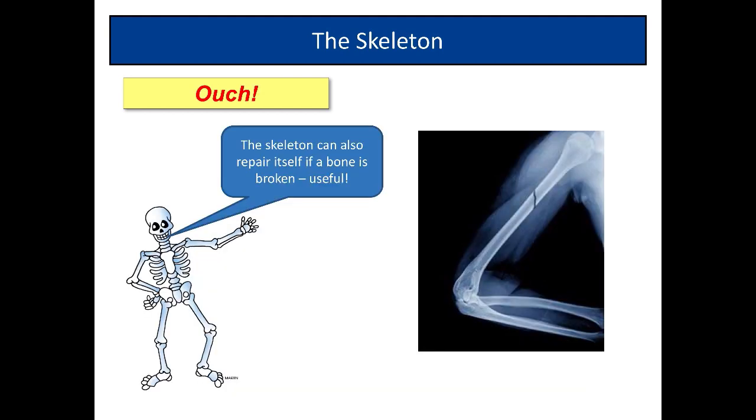Sometimes we have breaks. This looks to me to be rather a nasty break. That is a break of the humerus or upper arm bone. Break, or you may hear the term fracture - both those terms mean the same thing to a doctor. But the wonderful thing about the skeleton is it can repair itself if a bone is broken. If you've ever had a broken bone, hopefully it's repaired itself properly. Amazing property of bone.